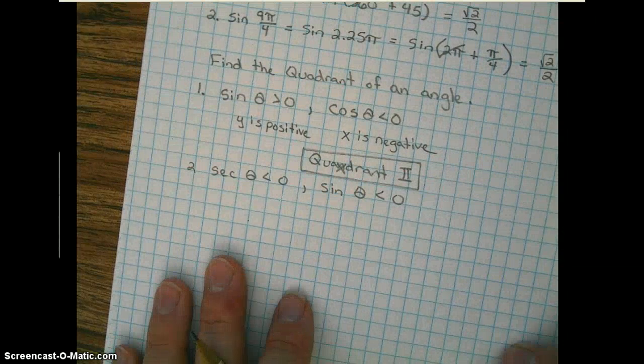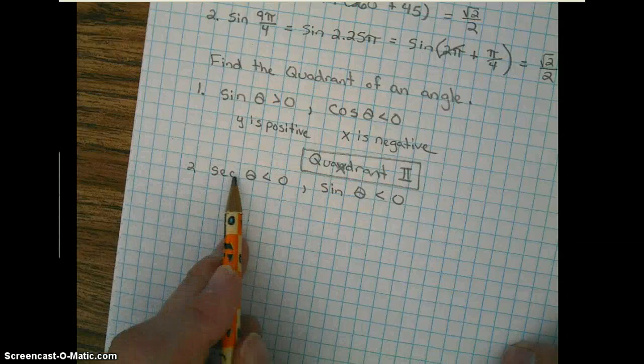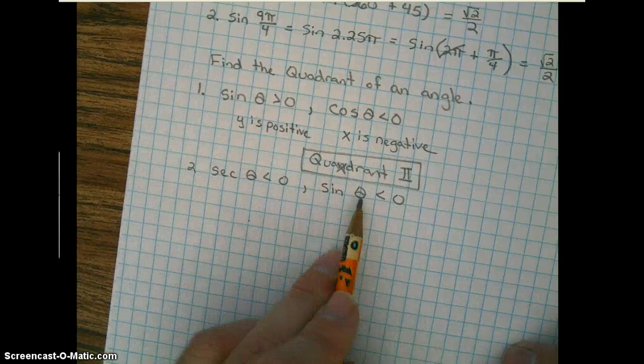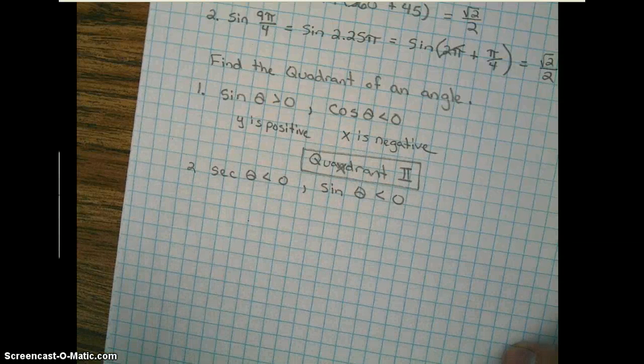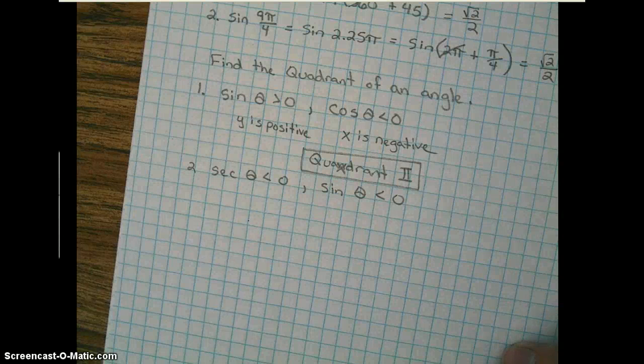Okay, let's look at another example. Here we have the secant of theta is less than 0, the sine of theta is less than 0. I suggest you pause the video and try it for yourself.